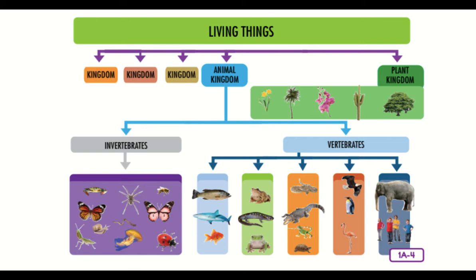Taxonomists identify animals by their characteristics or special features that set them apart from others. They divide the animal kingdom into smaller and smaller groups, with each smaller group having more and more in common with one another. Each group has a specific name. For example, you and I not only belong to the same kingdom, the animal kingdom, but we both belong to the same phylum — the phylum known as chordata — because we share similar body characteristics.